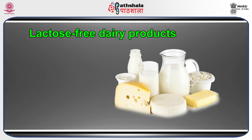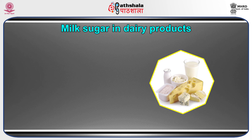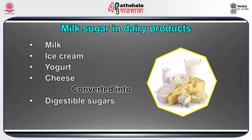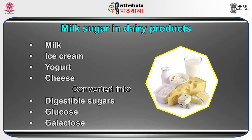Another important product is lactose-free dairy products — specialty products manufactured for lactose-intolerant people. In these individuals, the enzyme lactase is either absent or not present in sufficient quantity, which occurs naturally in the intestinal tract of children and many adults. The milk sugar in dairy products such as milk, ice cream, yogurt, and cheese is converted into digestible sugars — glucose and galactose — in the presence of lactase.